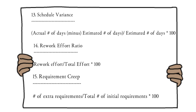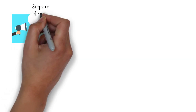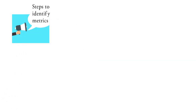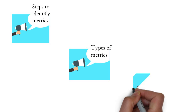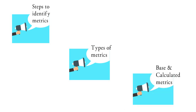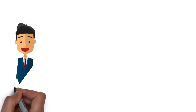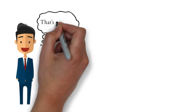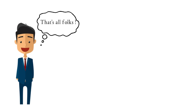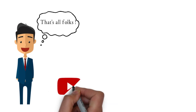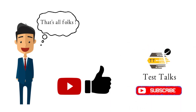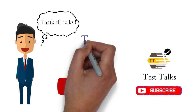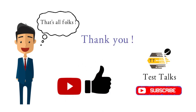To summarize, today we discussed software test metrics — the steps to identify metrics, the different types of metrics, base and calculated metrics, and examples for each calculated metric. I hope this video helps everyone understand the test metrics used in a project to monitor its progress. If this video helps you, please click the like button and subscribe to my channel, Test Talks. This is Sharon, signing off — thank you!